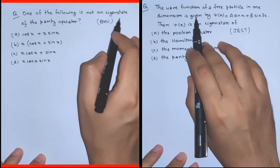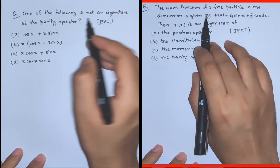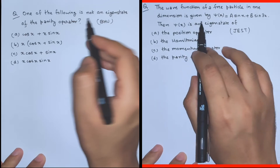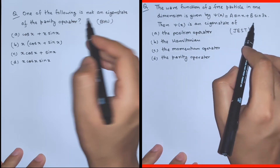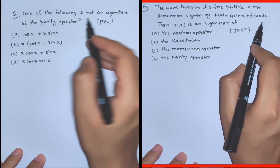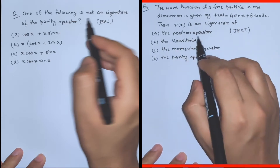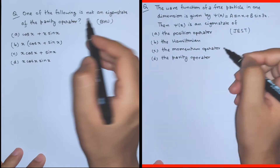One of the following is not an eigenstate of the parity operator. The wave function of a free particle in one dimension is given by ψ(x) = a·sin(x) + b·sin(3x). Then ψ(x) is an eigenstate of which of the following operators?